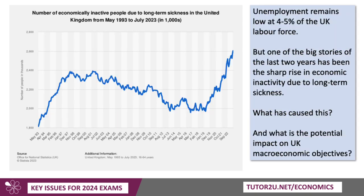What about the labour market? Well, unemployment is the topic that hasn't really taken off yet. Unemployment is pretty low — 4 to 4.5% of the labour force. People are expecting it to rise in 2024, but it hasn't really increased significantly. But if we look beneath the data, one of the big stories of the last two years has been a very sharp rise in economic inactivity due to long-term sickness — people of working age who are not actively looking for work. What's caused this, and what is the potential impact of over half a million extra people who are inactive due to long-term sickness on the UK's macro objectives?